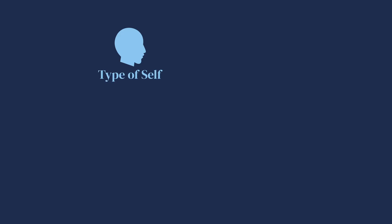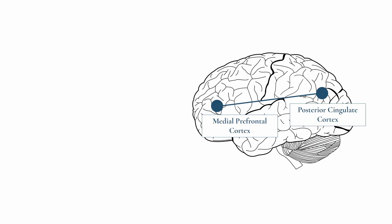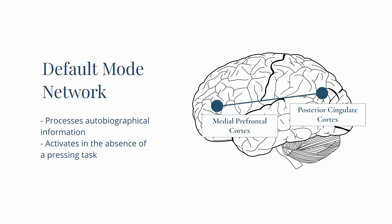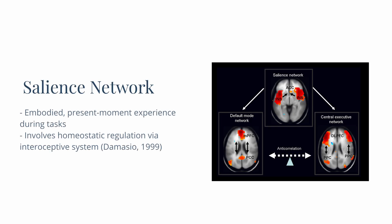A major one is the narrative self, which is linked to the default mode network — a connection of brain regions that come online when we're thinking about our life experiences or thinking thoughts related to ourselves. The experiencing self is when we're this embodied, present-moment self that's experiencing the world around us and moving about — no longer lost in our thoughts, but feeling like we are the body itself.